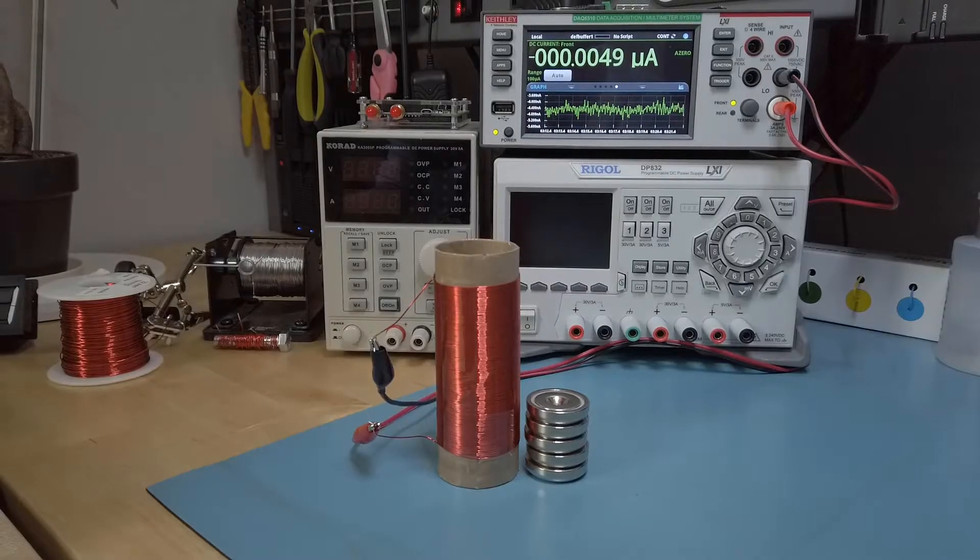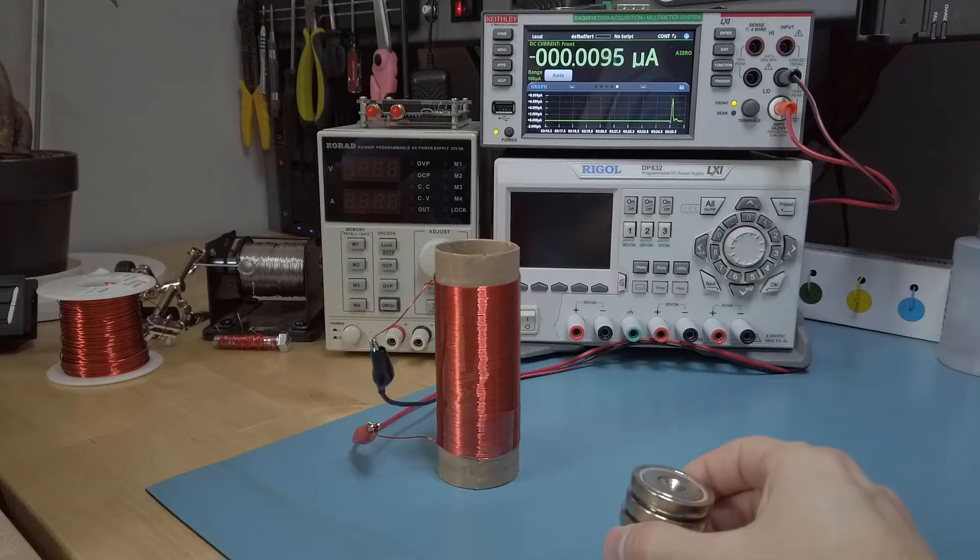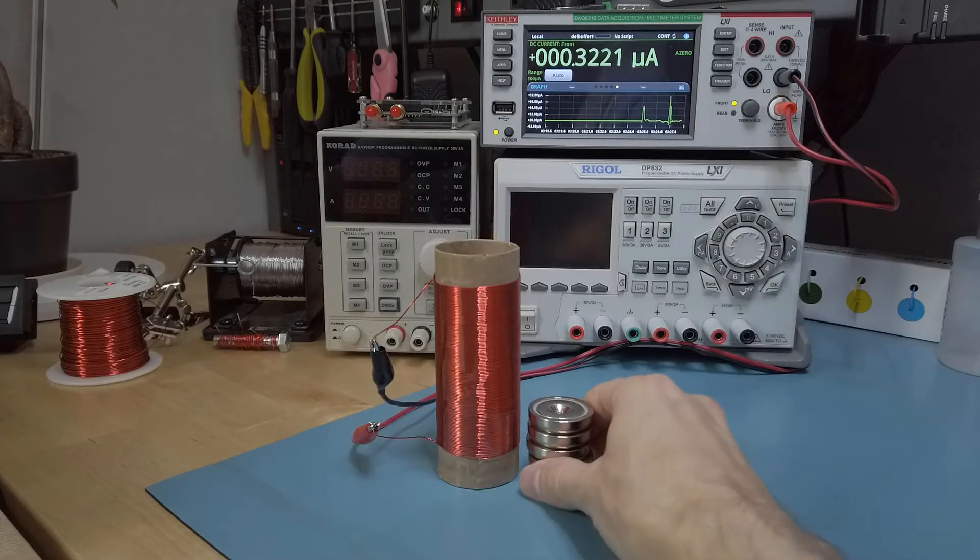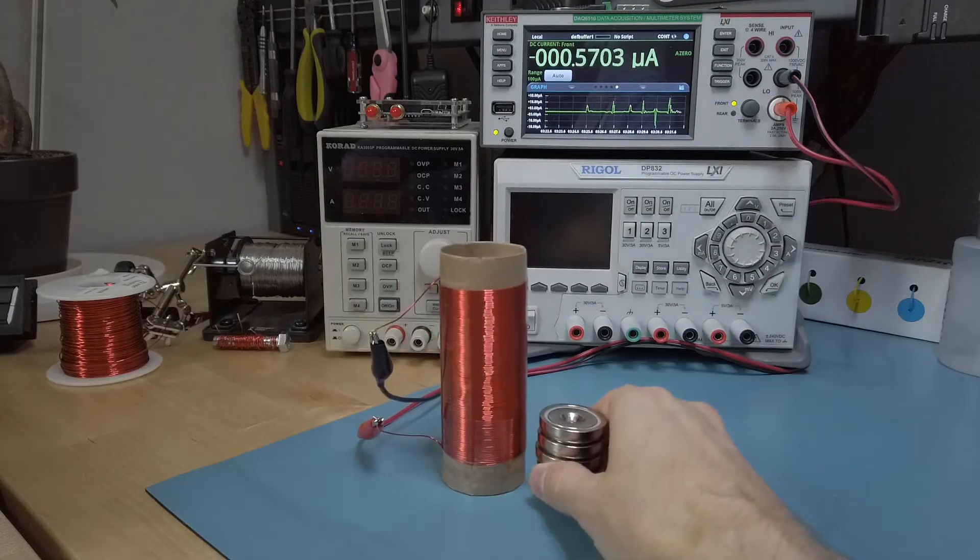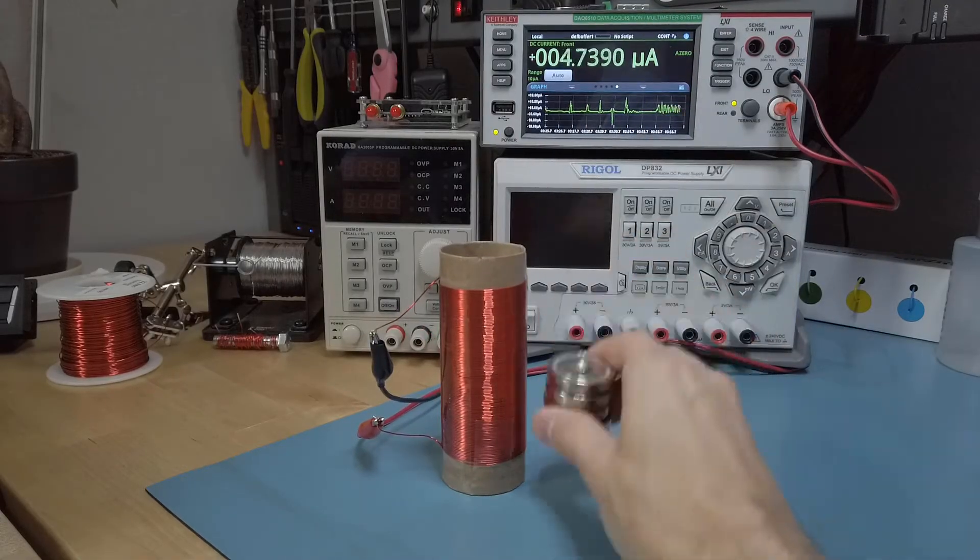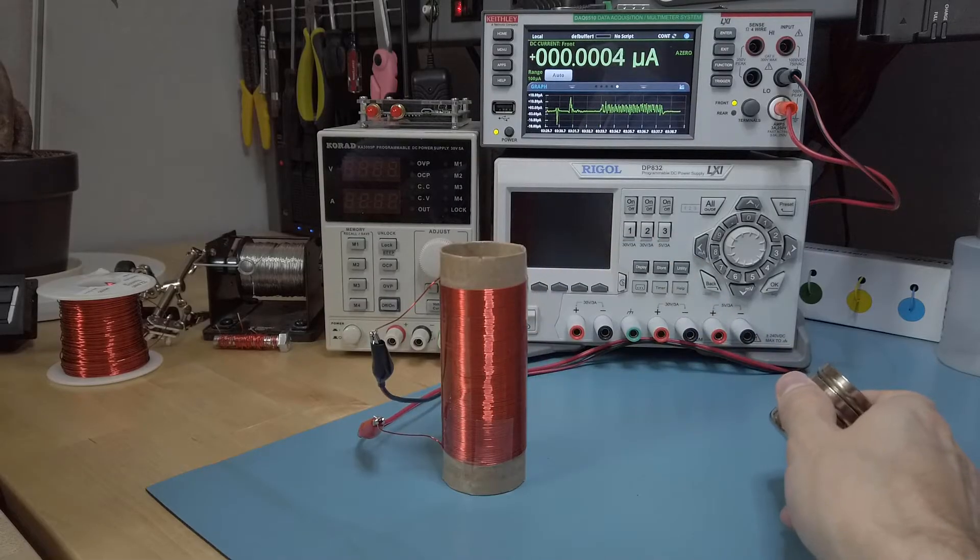Here I have the coil hooked up to an ammeter which is essentially a short circuit. Any voltage that is induced into the coil will generate a current that is a function of both the induced voltage and the resistance of the wire. Notice how the ammeter is only measuring current when the magnetic field is changing. This is essentially Faraday's law.